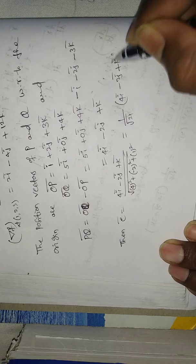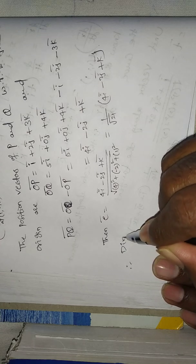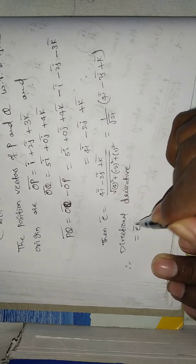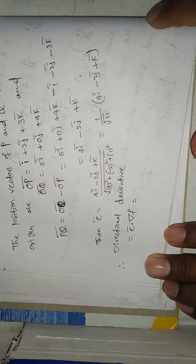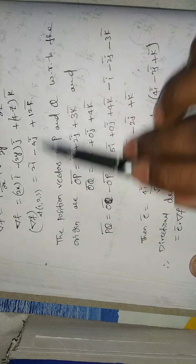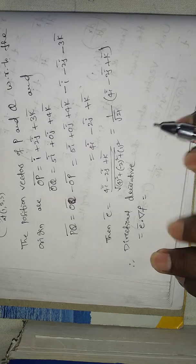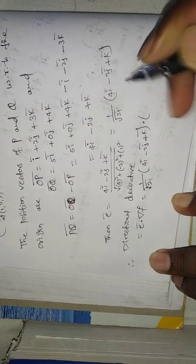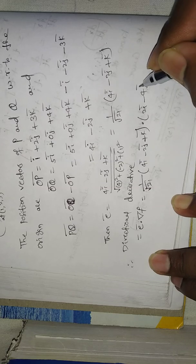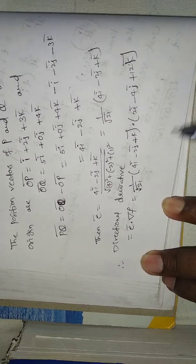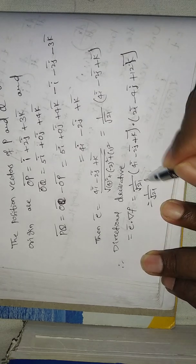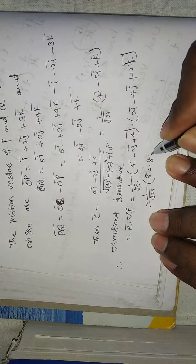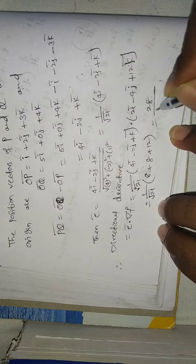Therefore, the directional derivative equals ê dot del f equals (1/√21)(4i-bar minus 2j-bar plus k-bar) dot (2i-bar minus 4j-bar plus 12k-bar) equals (1/√21)(8 + 8 + 12) equals 28/√21.